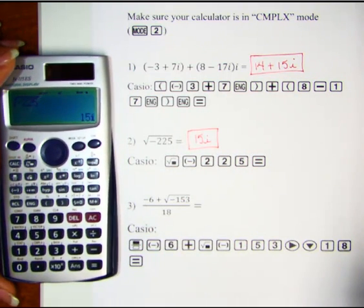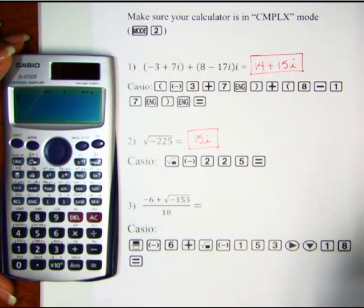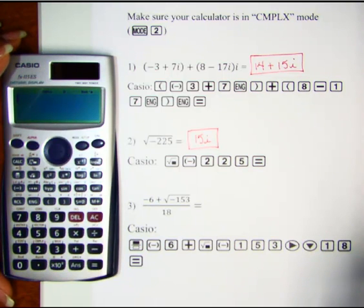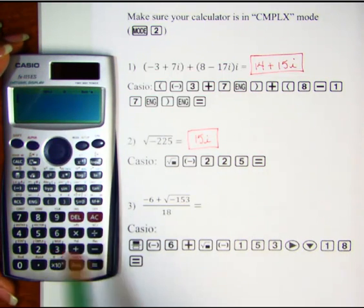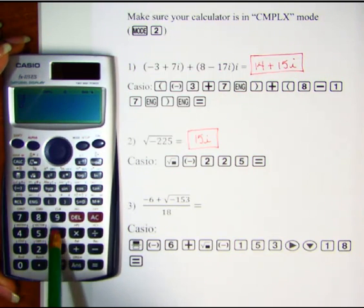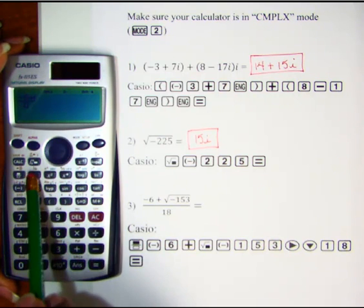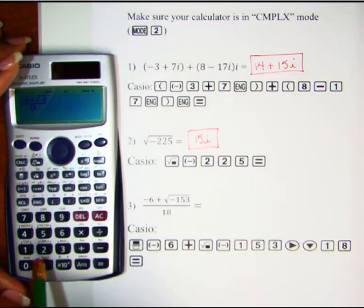Let's take a look at problem number three. Here we're going to simplify this rational expression containing an imaginary number. Let's hit our fraction button and then we'll enter negative six plus the square root of negative 153.